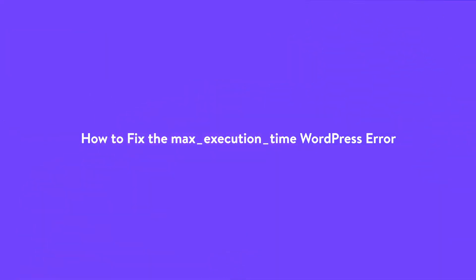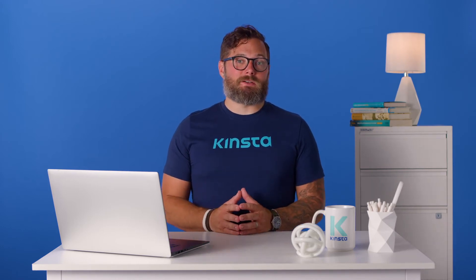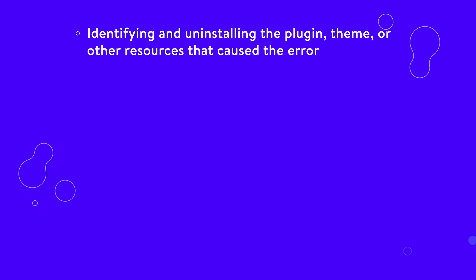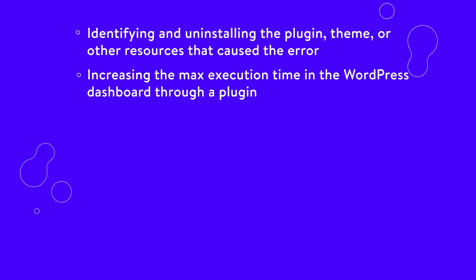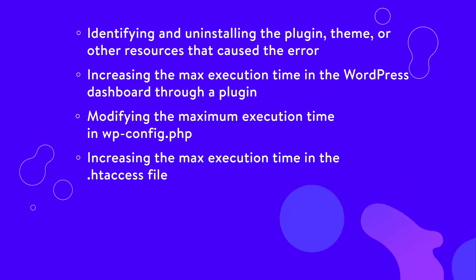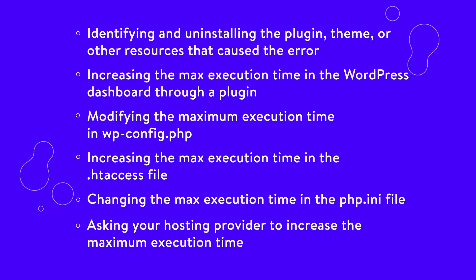The max execution time WordPress error appears after a plugin, theme, or WordPress update takes too long to run a PHP script. There are several ways to fix it. First, identifying and uninstalling the plugin, theme, or other resource that caused the error. Second, increasing the max execution time in the WordPress dashboard through a plugin. Third, modifying the maximum execution time in the wp-config.php file. Fourth, increasing the max execution time in the htaccess file. Fifth, changing the max execution time in the php.ini file. And sixth, asking your hosting provider to increase the maximum execution time.